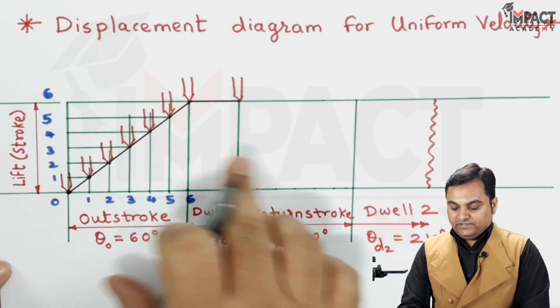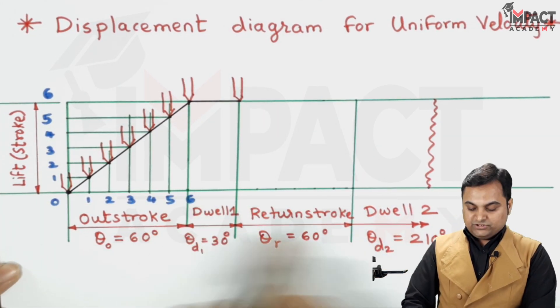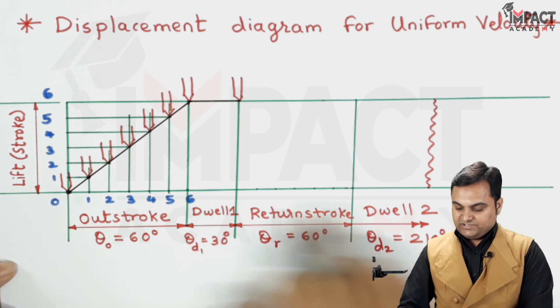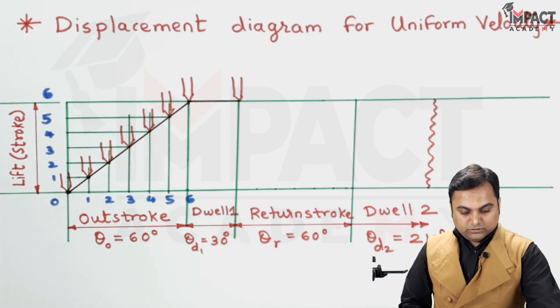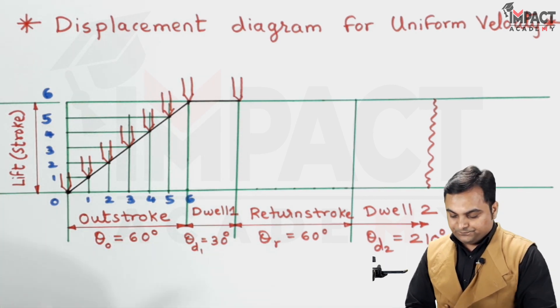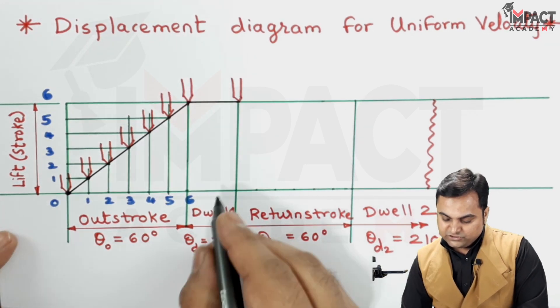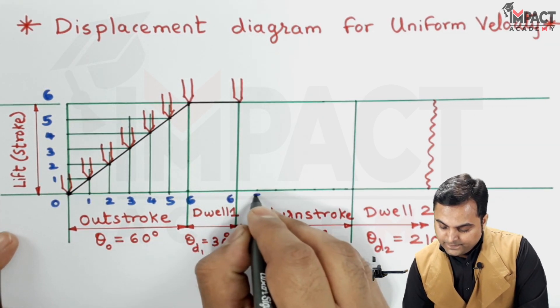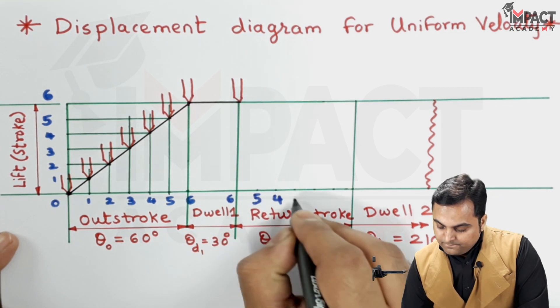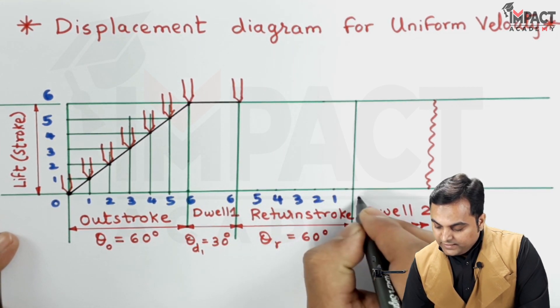Then after that there is return stroke, that is the follower will return to its original position, that is 0 from where it has started. And for that also I am giving the notation over here, and for simplicity I would be keeping the same notations in reverse order. Here it is 6, 5, 4, 3, 2, 1 and 0.